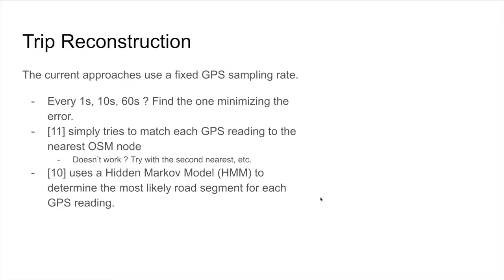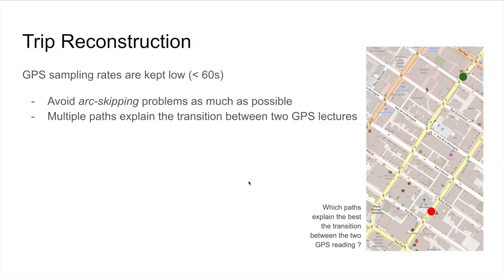An interesting point on current approaches is that GPS sampling rates are kept low—what I mean by low is that they're all under one minute. This is basically to avoid a problem called arc-skipping as much as possible.